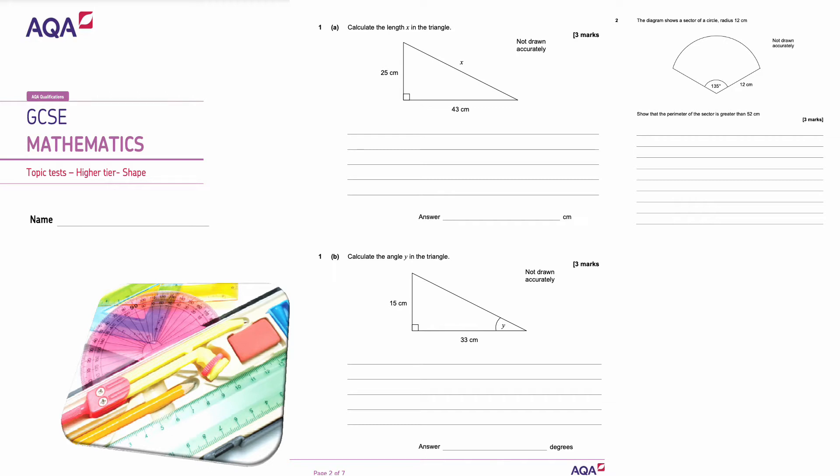We're going to start with question number 1A. Calculate the length x in this triangle. Well, it's a right angled triangle so I'm going to use Pythagoras. That's A squared plus B squared is equal to C squared.